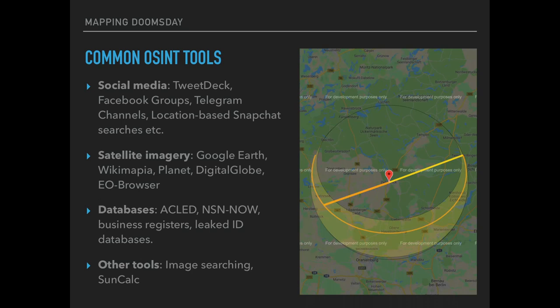Here are some common tools used within open source intelligence. Twitter is a great source — TweetDeck is a great way of accessing large numbers of tweets at once. Facebook groups often have a lot of hidden information that is semi-open, accessible if you join the group. You've also got Telegram channels, and location-based Snapchat searches, which is interesting because people often feel Snapchat is more personal and aren't sharing with as many people — but you can search based on location. With satellite imagery, the most obvious tool is Google Earth, which is very powerful especially since you can access historic imagery.